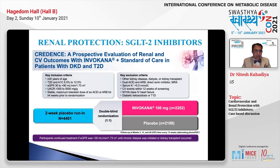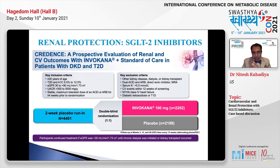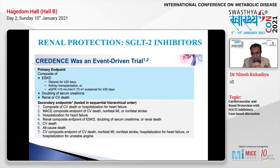This sets up the platform to discuss the CREDENCE trial. Adults 30 years and older with type 2 diabetes were included; estimated GFR could be as low as 30, with urine albumin-creatinine ratio ranging from 300 to 5000. They were already on maximum tolerated dose of ACE inhibitor or ARB for at least four weeks. One group received canagliflozin 100 mg, the other placebo. Patients continued treatment even if GFR dropped below 30 until chronic dialysis or kidney transplant.